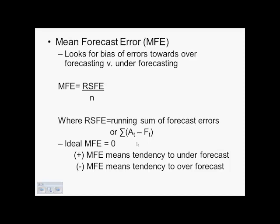We're now going to move on to a mean forecast error. We're looking at chapter 4, slides 18 and 19. The mean forecast error, or MFE, looks for a bias of errors towards forecasting — over forecasting or under forecasting.